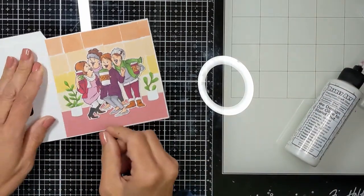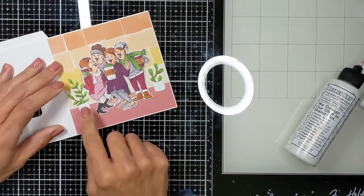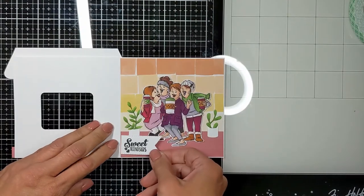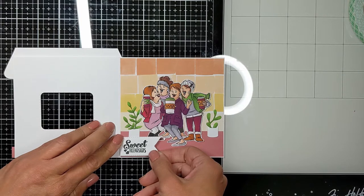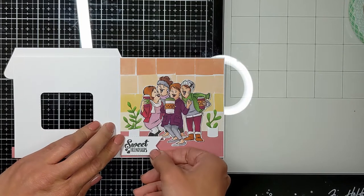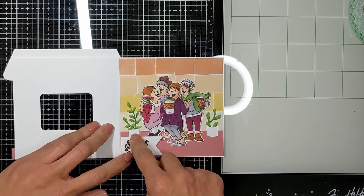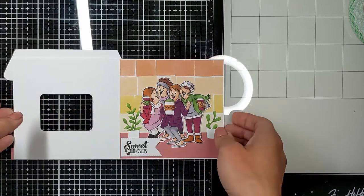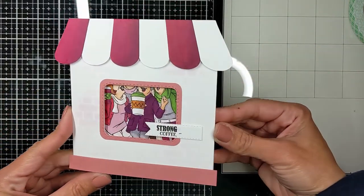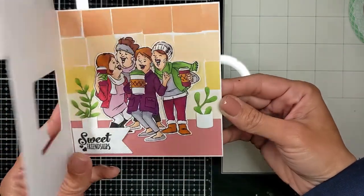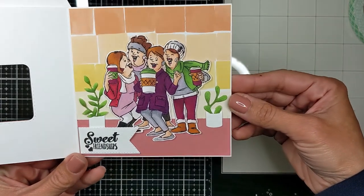Then from the same stamp set as the girls, I used the sentiment 'strong coffee sweet friendships,' but I cut them in half. I stamped one and put it outside - that's 'strong coffee.' I cut a banner inside and when you open it, it says 'sweet friendship.' So 'strong coffee sweet friendship.'